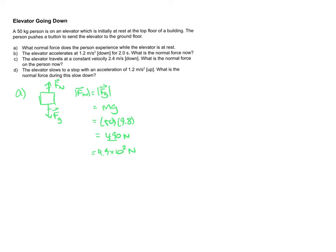Okay, B. Now what if the person has an acceleration of 1.2 meters per second squared down? Okay, so when I draw the free-body diagram, since the acceleration is down, that means the net force has to be down as well.